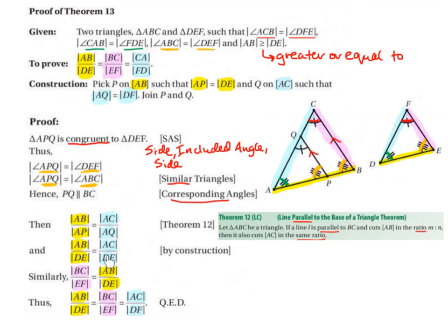BC divided by EF equals AB divided by DE because they are corresponding sides. Since these two are equal, we can let AB over DE and AC over DF also equal BC over EF. That is how we get all three ratios to be equal, and this is what we were asked to prove.